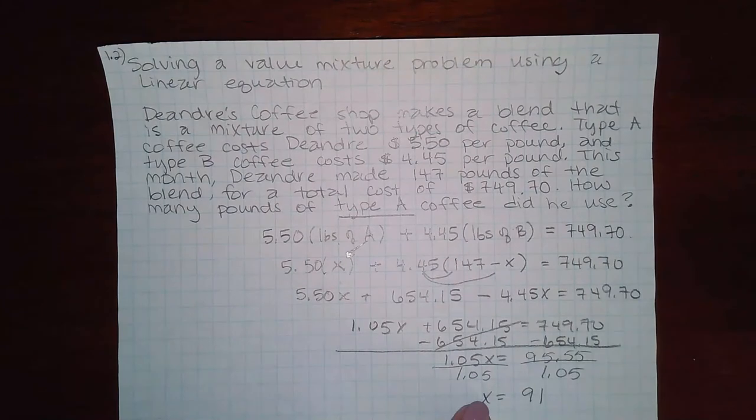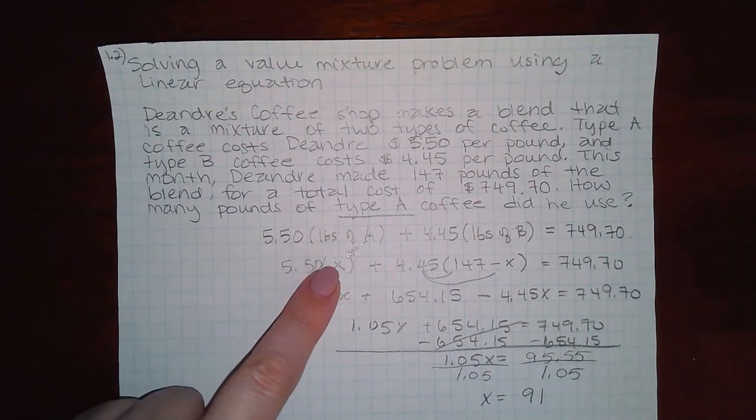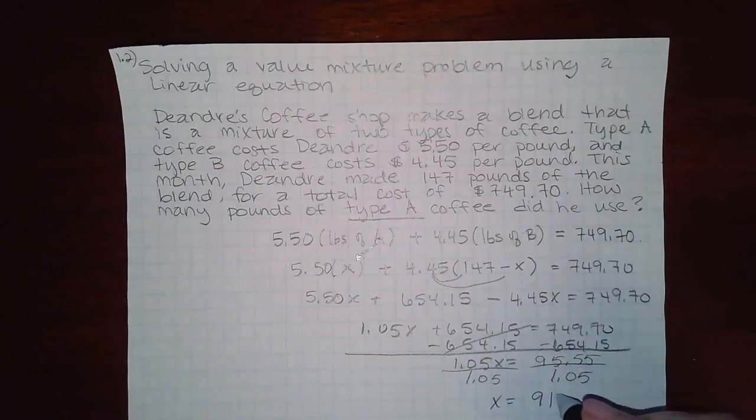So X equals 91. And since X was the amount of pounds for type A, we have found the answer.